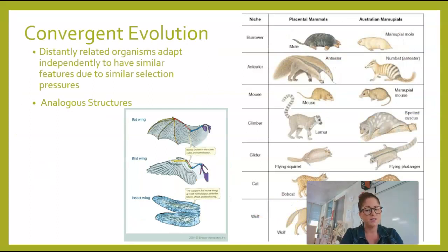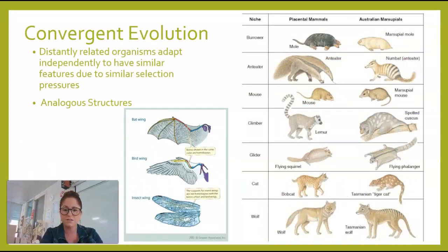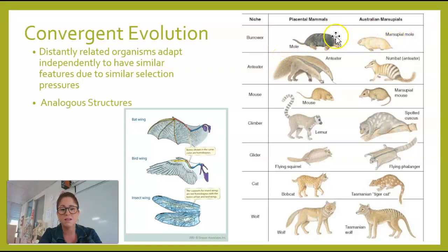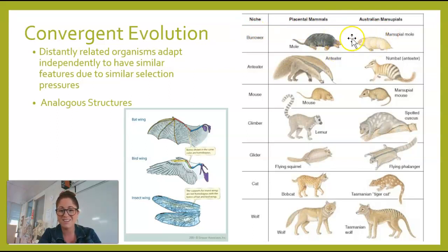Convergent evolution is sometimes confusing to students. It shows that two distantly related organisms have adapted independently to have similar features. Really good examples of this are placental mammals in North America and Australian marsupials. The mole and the marsupial mole have a lot of similar features because they are under similar environmental pressures, but they are not closely related.